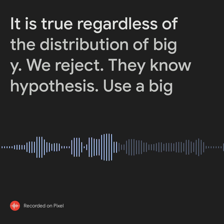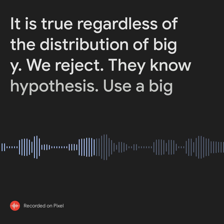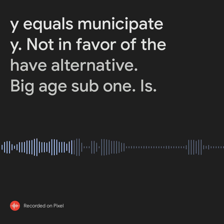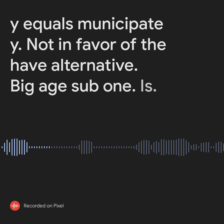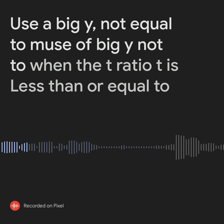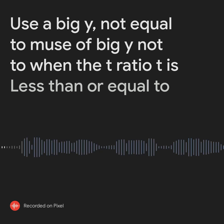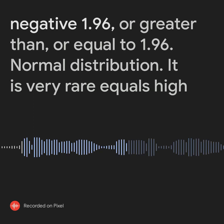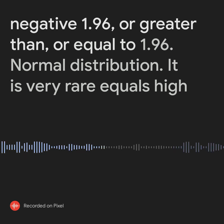This holds regardless of the distribution of Y. We reject the null hypothesis H_0: mu sub Y equals mu sub Y-naught in favor of the alternative H_1: mu sub Y not equal to mu sub Y-naught when the t-ratio t is less than or equal to negative 1.96, or greater than or equal to 1.96.